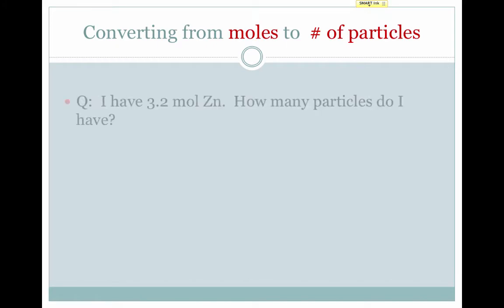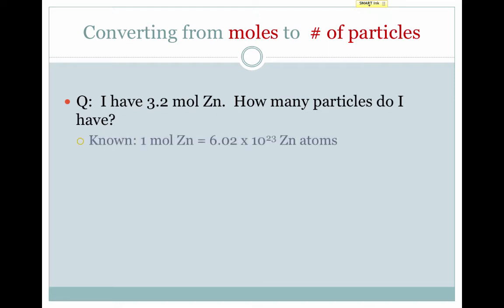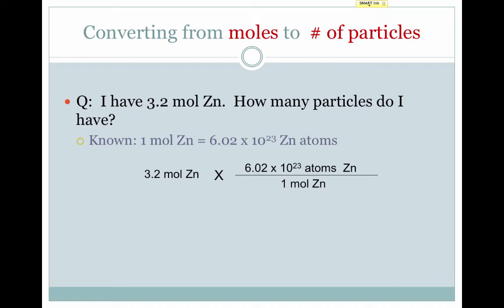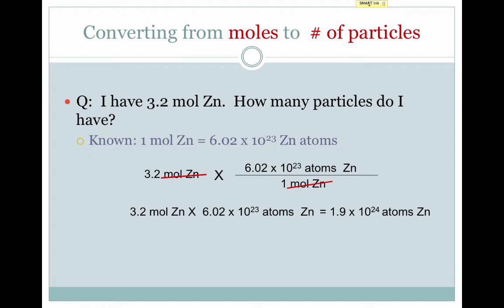So how do we convert from moles to number of particles? Say I have 3.2 moles of zinc and I want to know how many particles I have. I know that one mole of zinc equals 6.02 times 10 to the 23rd zinc atoms. Therefore, I can set up a conversion factor. My given is 3.2 moles of zinc. If I multiply that by the conversion factor — 6.02 times 10 to the 23rd atoms of zinc per one mole of zinc — my moles of zinc will cancel, and I end up with 1.9 times 10 to the 24th zinc atoms.